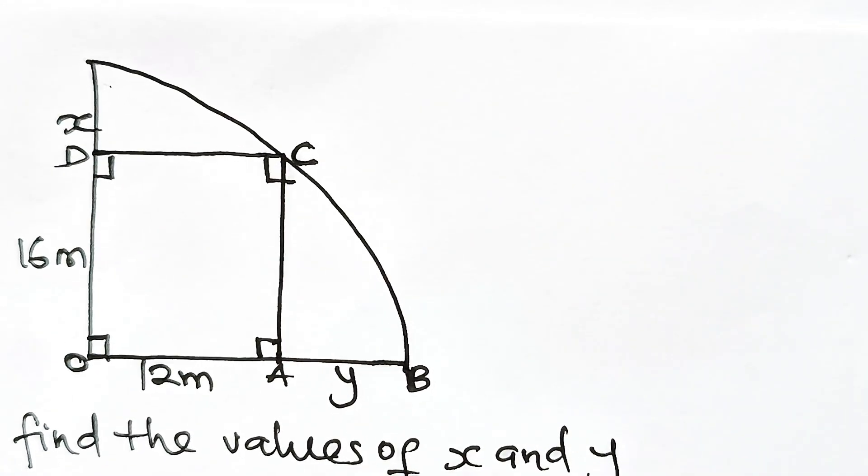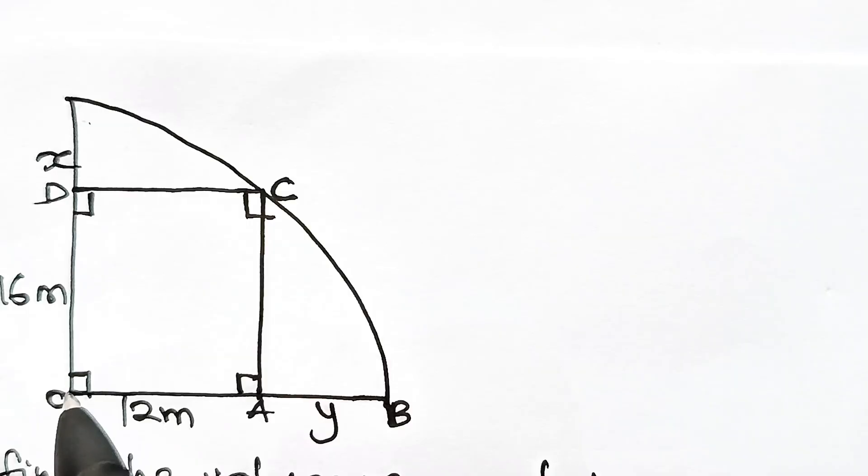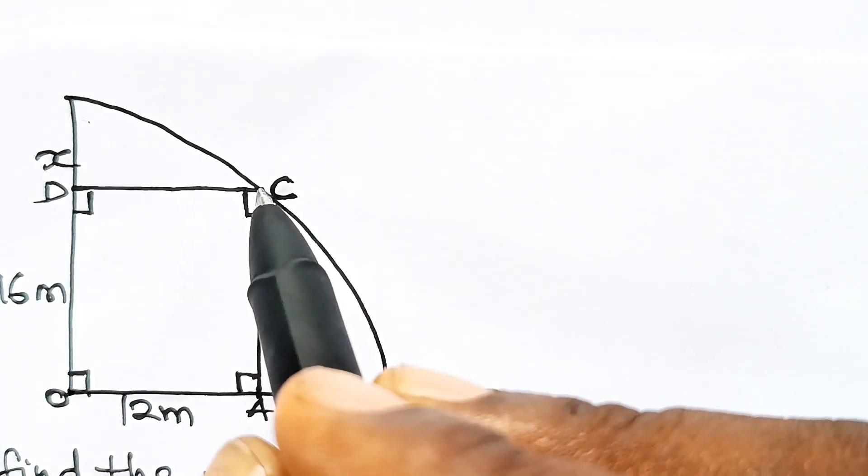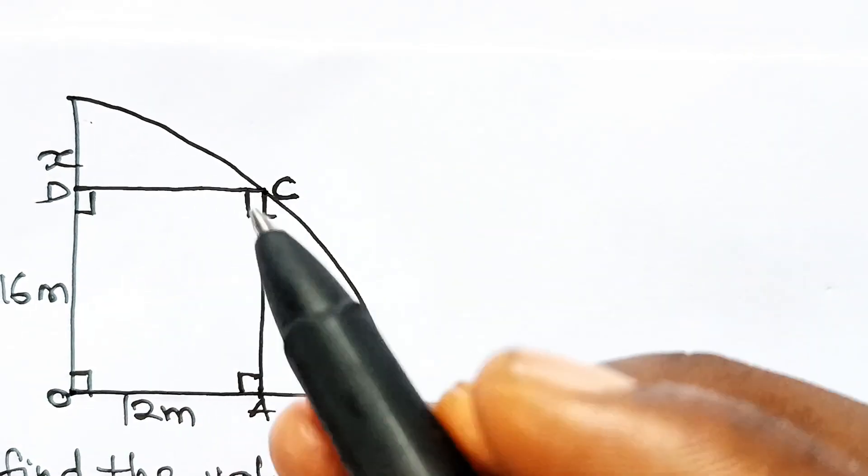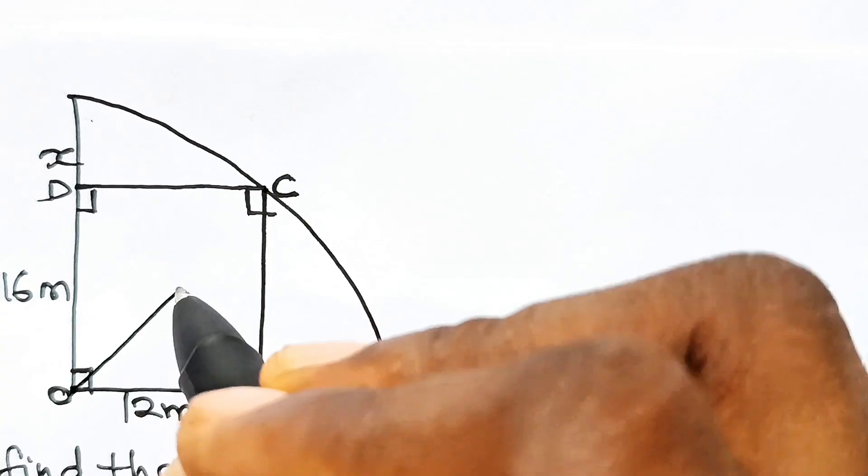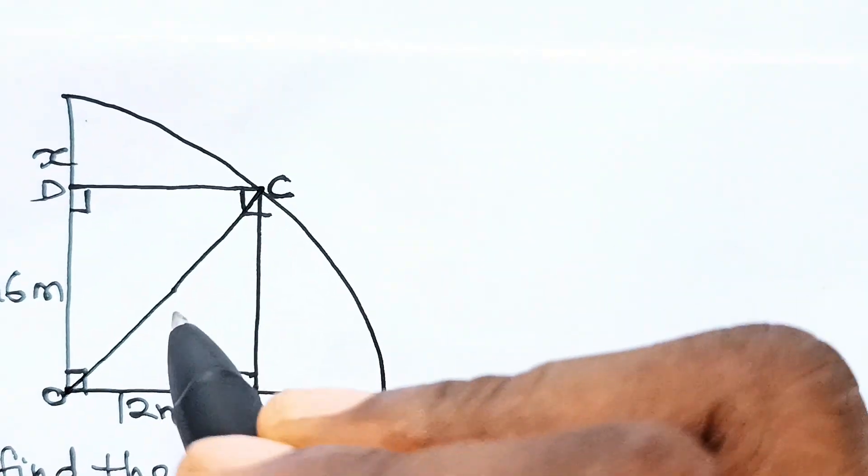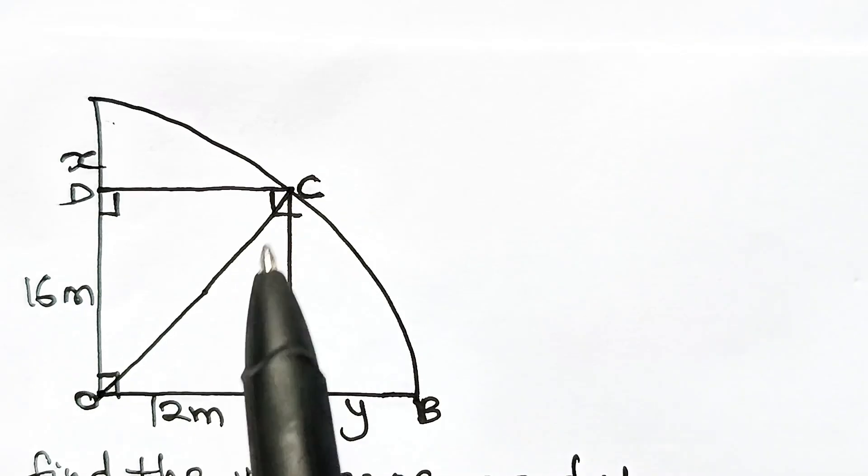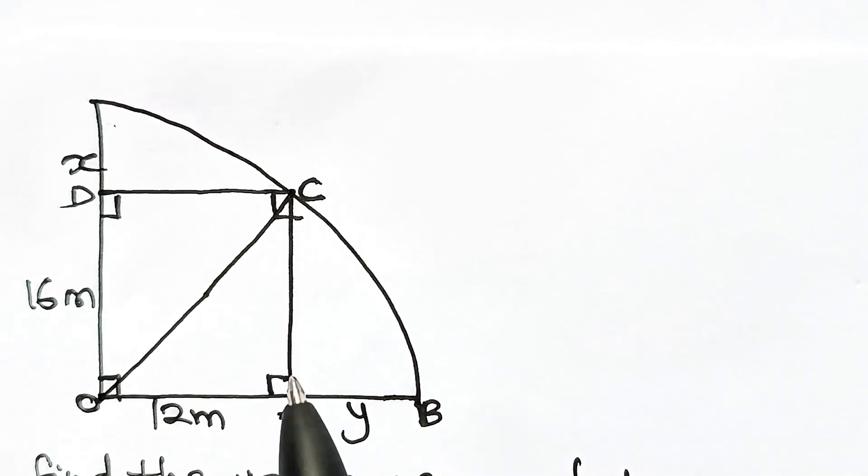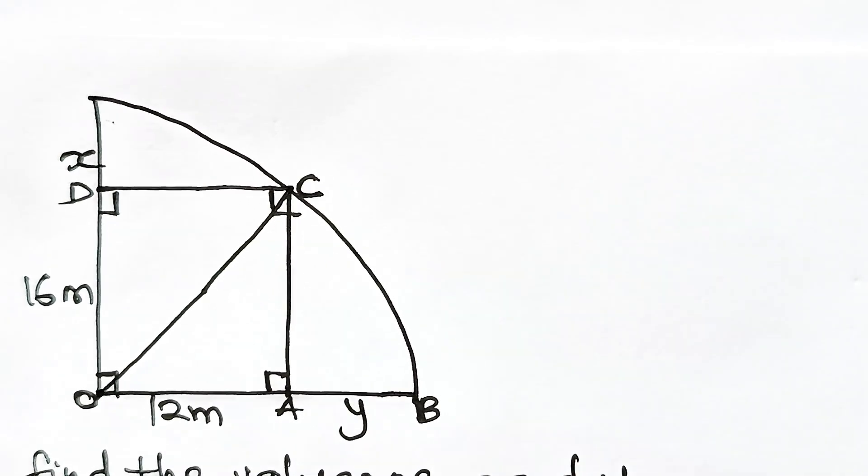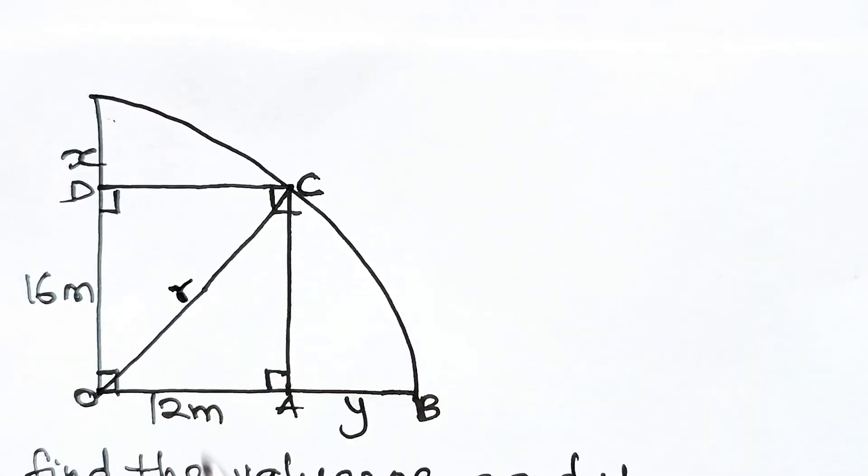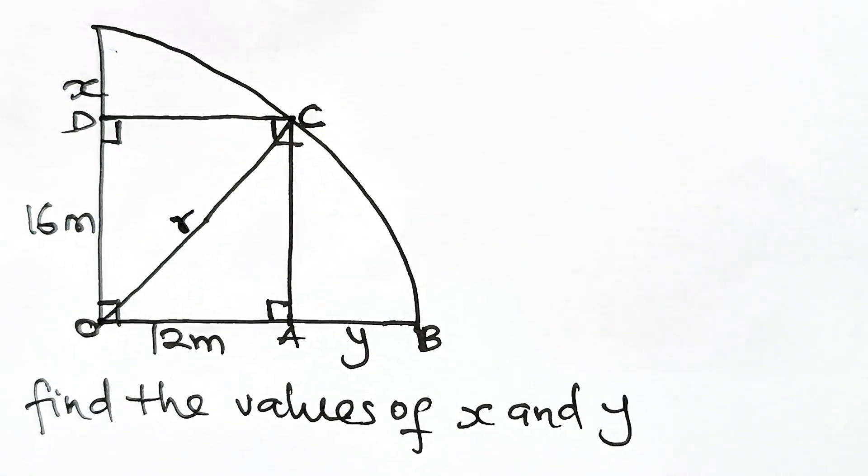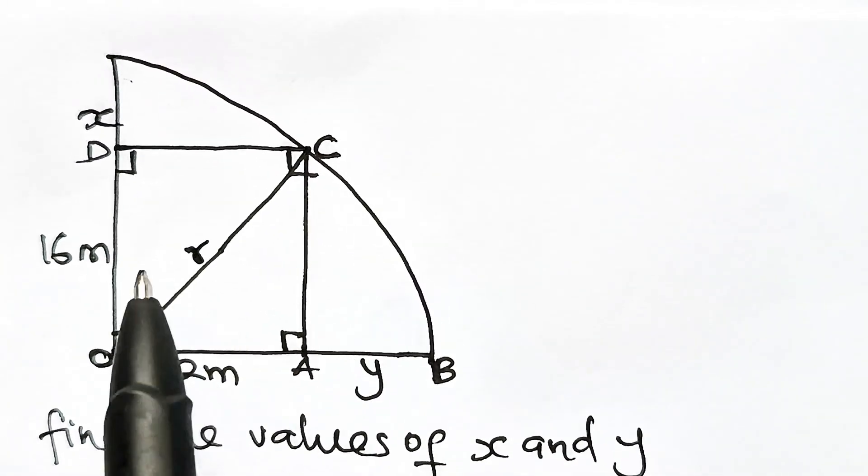If I connect the center O to this point C, I'm going to get the radius of the circle. This point C is the most important point here because with that I will form a right angle triangle. So line OC is the radius of the circle.